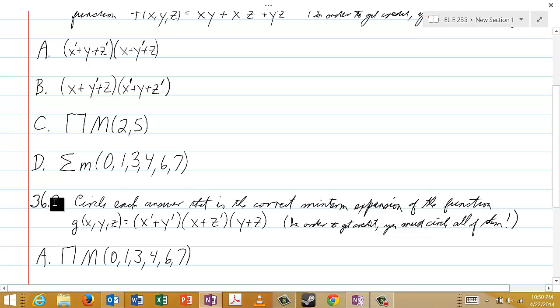And in 36.2, you circle each answer that is the correct min-term expansion of the function g of x, y, z, which is equal to x prime or y prime, anded with x or z prime, anded with y or z. And again, in order to get credit, you want to circle all of them that are correct.